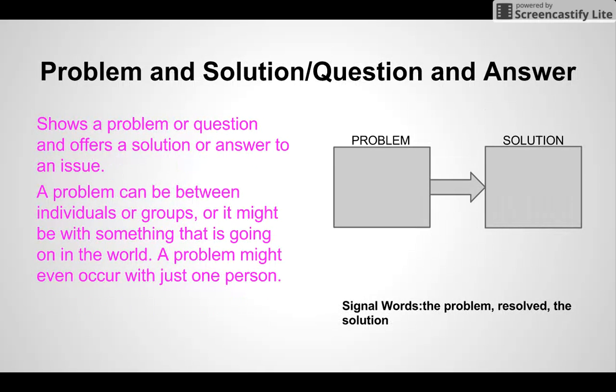Problem and solution, or it's labeled as question and answer, shows a problem or question and offers a solution or answer to a specific issue. A problem can be between individuals or groups, or it might be with something that is going on in the world. A problem might even occur with just one person. Some signal words you might see are the problem, resolved, the solution.